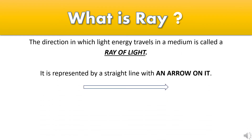What is a ray? The direction in which light energy travels in a medium is called a ray of light. It is represented by a straight line with an arrow on it.